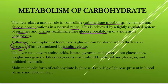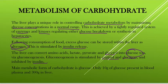The liver also converts amino acids, lactate, pyruvate, and glycerol into glucose via the process of gluconeogenesis. Gluconeogenesis is stimulated by cortisol and glucagon, and inhibited by insulin.